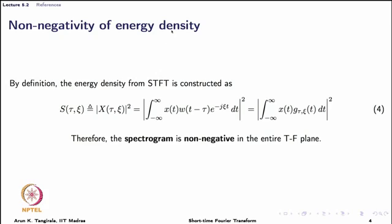The first property of interest is to check whether the joint energy density from the short time Fourier transform is non-negative. By definition the spectrogram is non-negative, so there is not much to discuss here — it is fairly obvious that the joint energy density is going to be non-negative in the entire time-frequency plane. Strictly speaking the joint energy density should have a factor of 1 over 2π, but following Mallat's convention, as long as you remember that the spectrogram is the squared magnitude of the short time Fourier transform, you are safe.